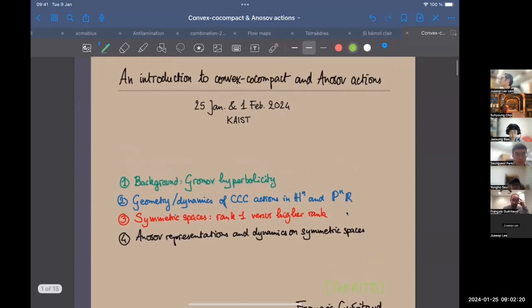I will try to do my best today to cover the first two halves of the program here: some background on the realm of hyperbolicity, and what we mean by convex co-compact actions in the classical sense, so actions on the hyperbolic plane, hyperbolic space, or more generally spaces with strict negative curvature property, and also in a slightly more novel sense where you look at actions on projective space P^N.